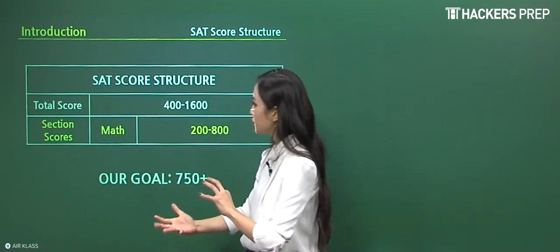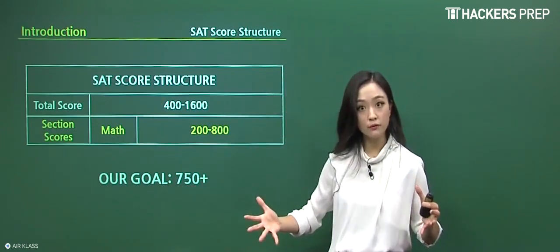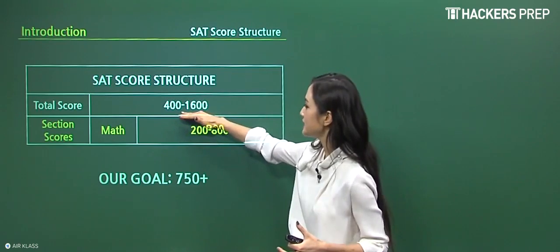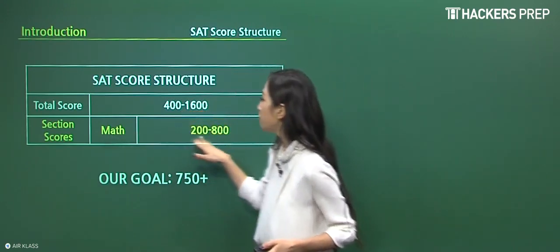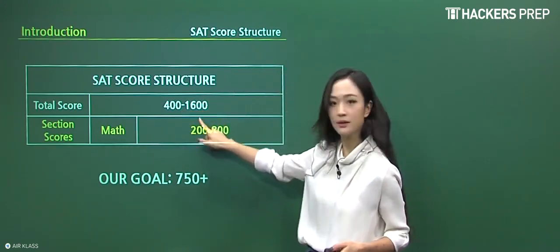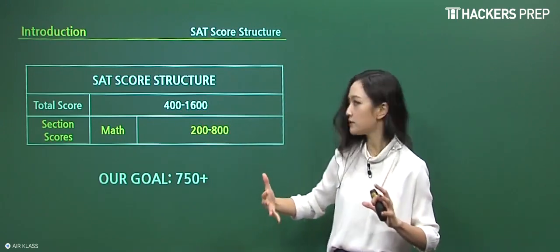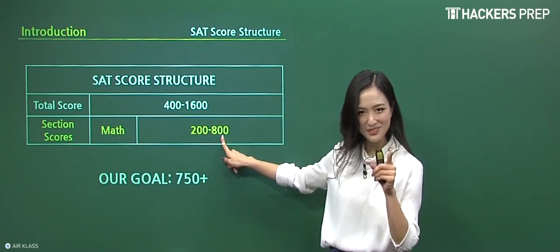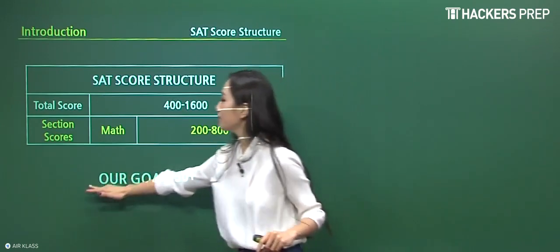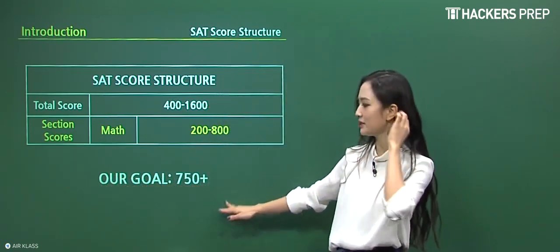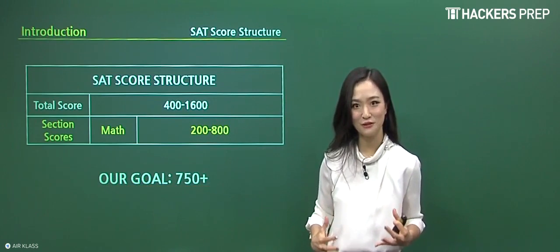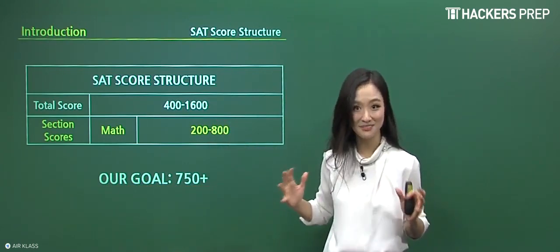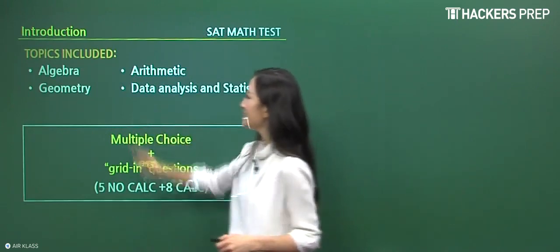So the score structure, we can see that the total score for the SAT test itself is a maximum of 1600, and the math portion does actually comprise half of that. So the scale range is going to be lowest being 200, and the highest, the perfect score, is 800. And through our course, our goal is going to be above the 750 range, and more of the perfect score. We can do it together.